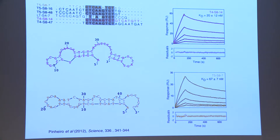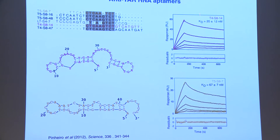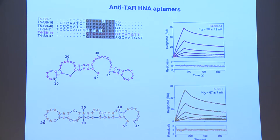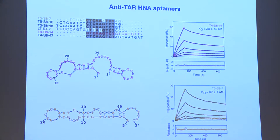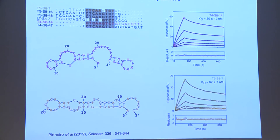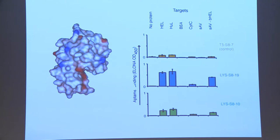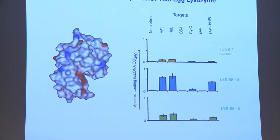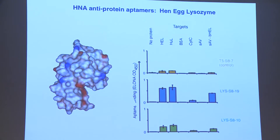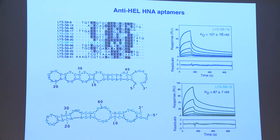We measured the affinities — these have respectable affinities in the mid to low nanomolar range. But making nucleic acids bind other nucleic acids is not that interesting, so we tried to make aptamers against a protein target. Hen egg lysozyme is nice and cheap, so we started with that. We get decent binding with cross-reactivity to the related human lysozyme — not great, but respectable affinities.